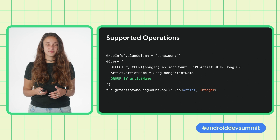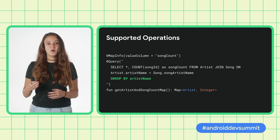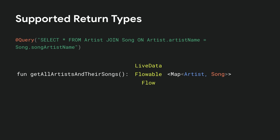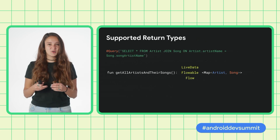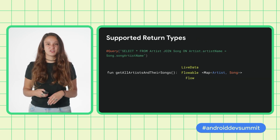Another added benefit of relational query methods is that now we can support more data operations. Here's an example of grouping that is now seamlessly possible with this new feature. And here's an example of filtering that is now possible. Lastly, it's important to note that Multimap is a core return type and can be wrapped with the various observable types that are already supported by Room. So relational query methods allow you to easily define as many relations as you want in your database.